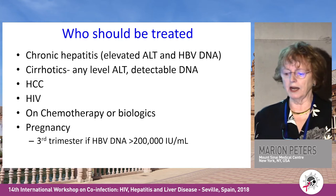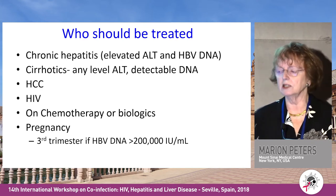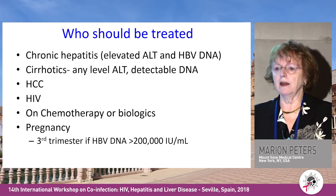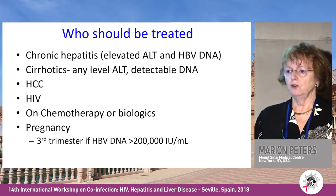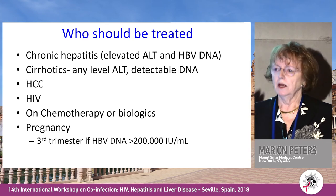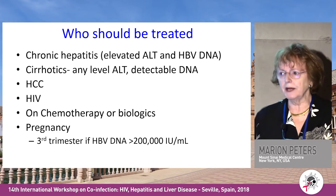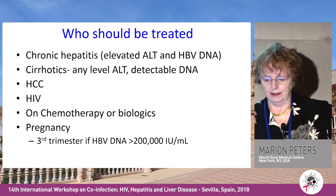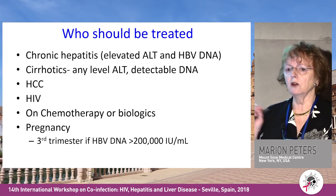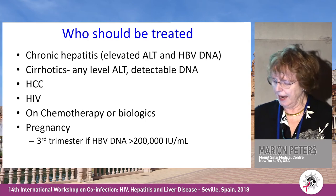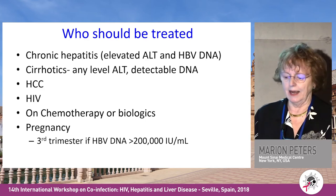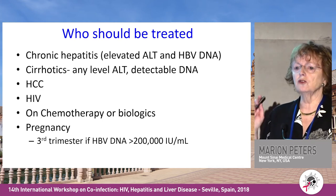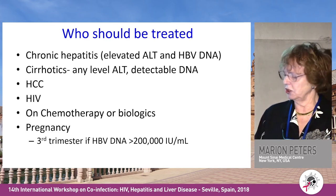Who do you treat? Chronic hepatitis: elevated ALT and HBV DNA — simple. Cirrhotics: treat all if they have detectable HBV DNA; don't follow guidelines, just treat them. If they have hepatocellular carcinoma, treat them — there is data showing it prolongs life. If they have HIV, treat them. If they're on chemotherapy or biologic response modifiers, treat them. In pregnancy, if HBV DNA is higher than 200,000 international units, treat in the third trimester to prevent mother-to-child transmission.